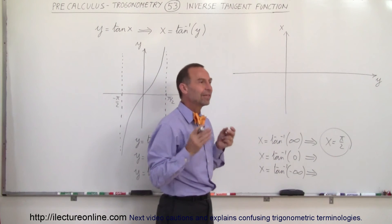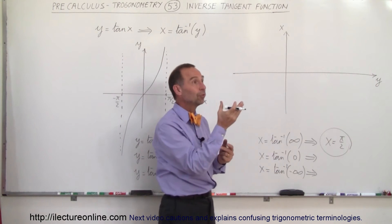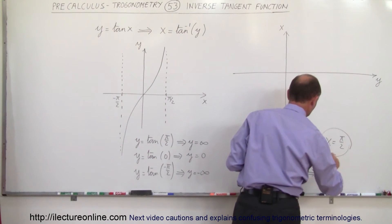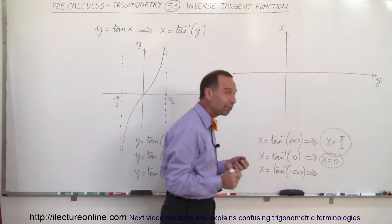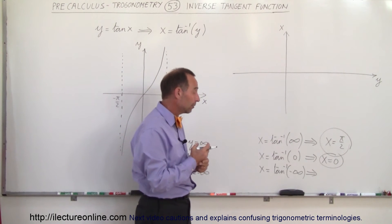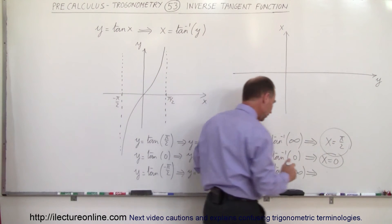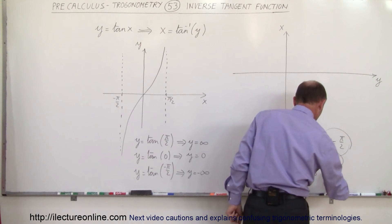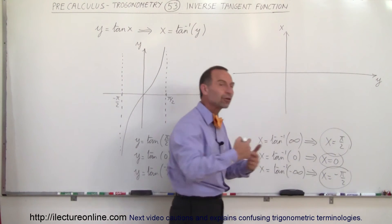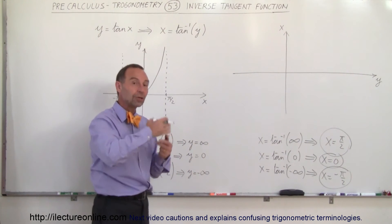Likewise, if the end result is 0 — for what angle is the tangent 0 — that happens when the angle is 0, so x equals 0. And finally, if I say for what value of the angle do you get negative infinity when you take the tangent of that, the tangent of what angle gives me negative infinity — that will happen at x equals minus π over 2. You do the process in reverse: you're given the result and you're looking for the angle.